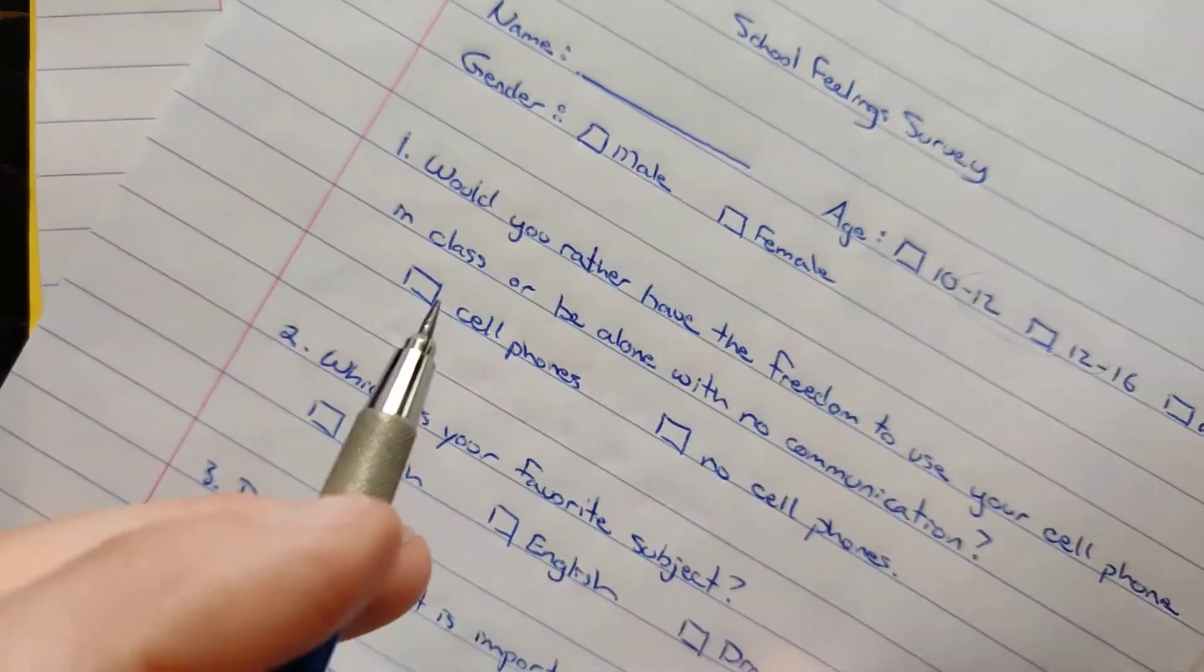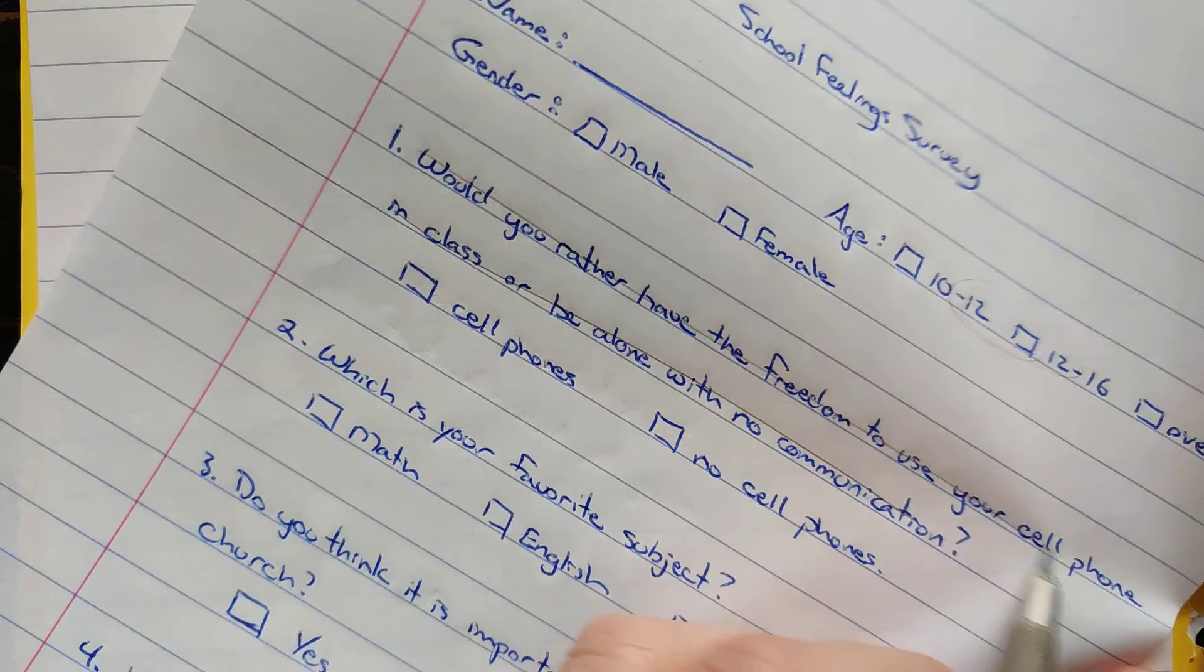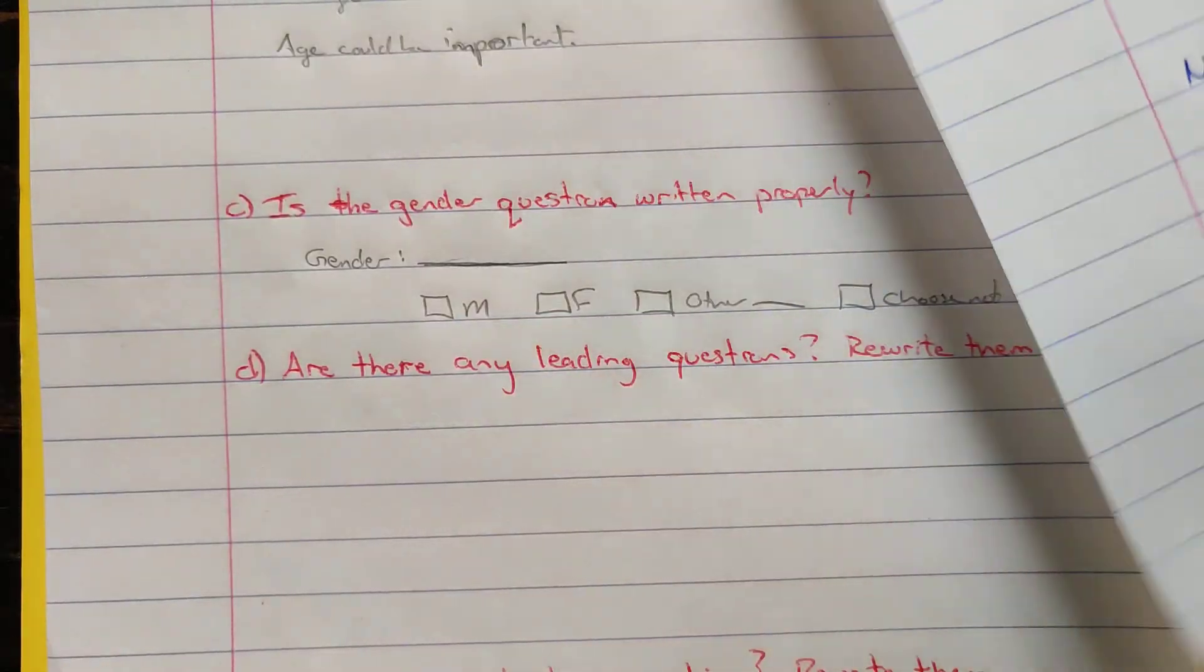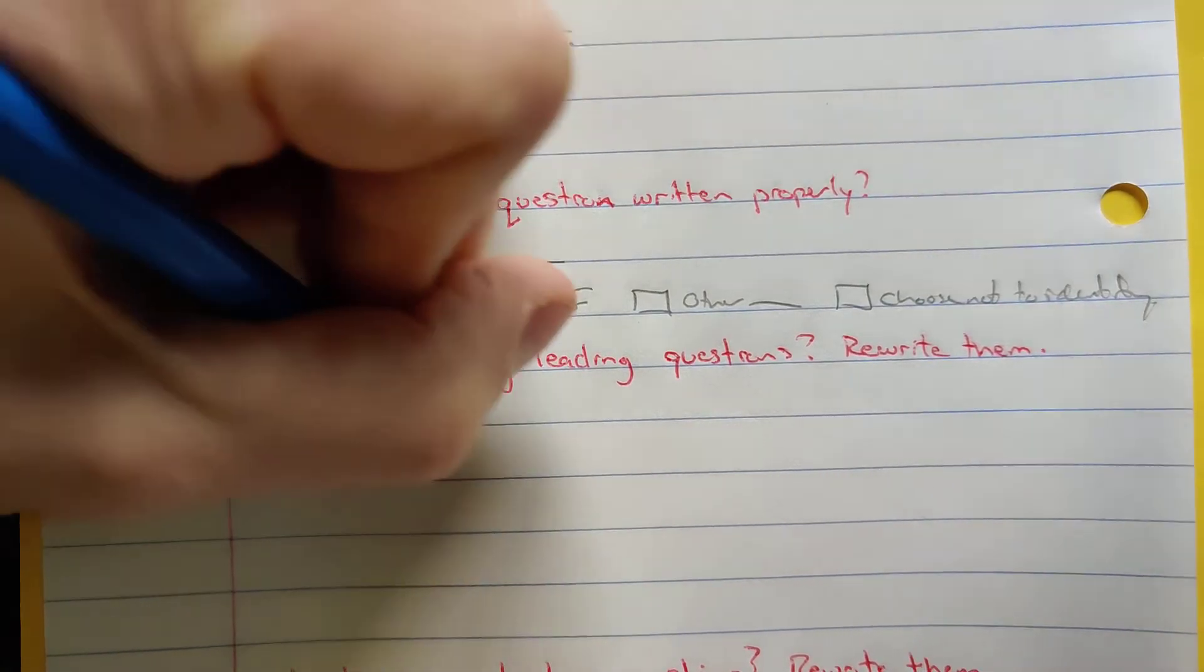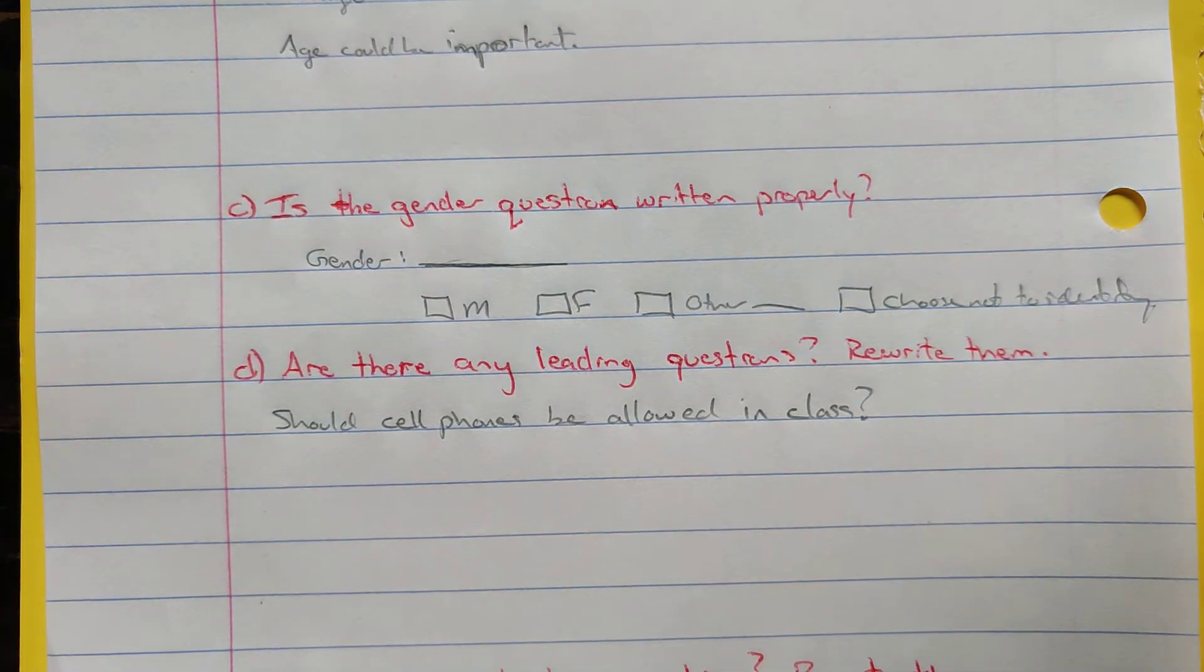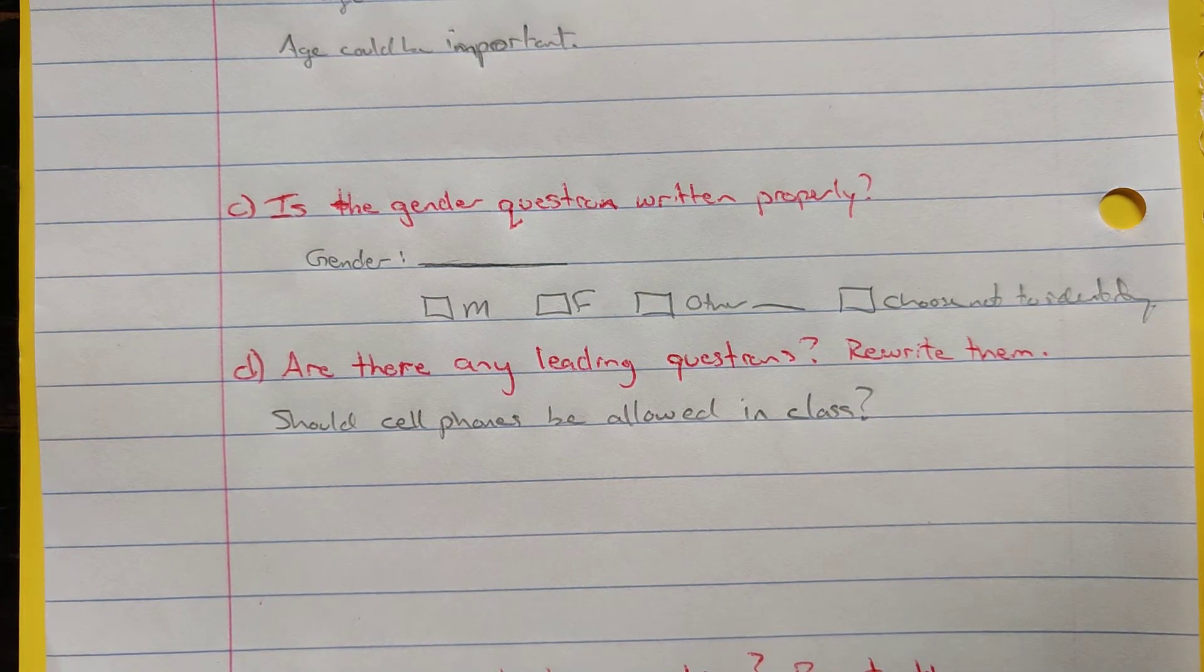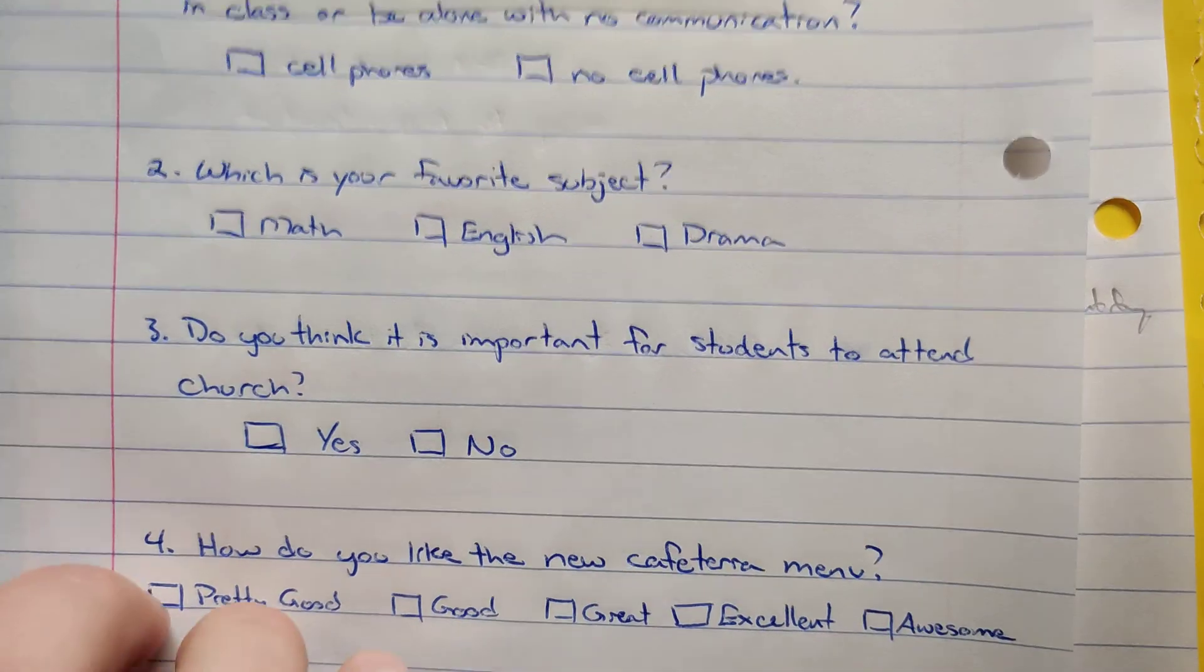So how could we take that question and rewrite it? This whole question needs to go and could just then change to something like, should cell phones be allowed in class? That would remove any influence on that.